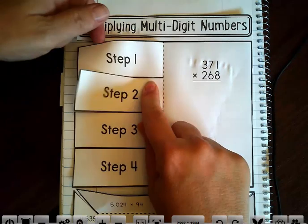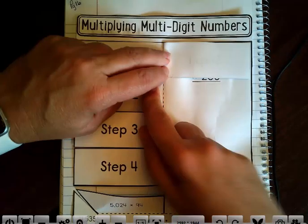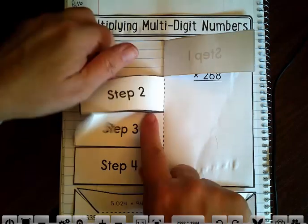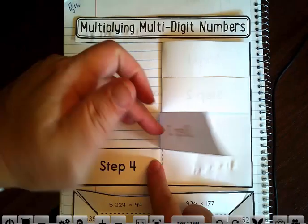So you're going to make each step a flap, and you're going to fold it on the dotted line. Make sure you cut that accordingly. Fold it on the line.